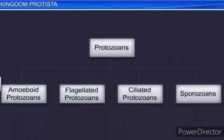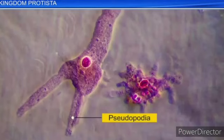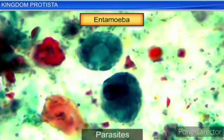There are four major groups of protozoans. First: amoeboid protozoans — example Entamoeba. These organisms live in fresh water, sea water, or moist soil. They move and capture their prey using pseudopodia. 'Pseudo' means false, 'podia' means feet — false feet. Marine forms have silica shells on their surface. Some, such as Entamoeba, are parasites.